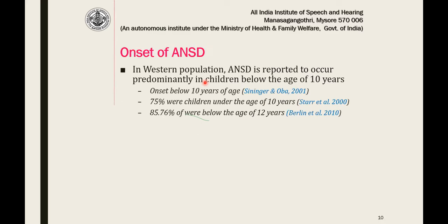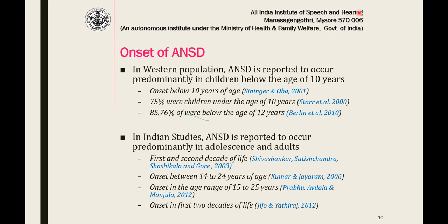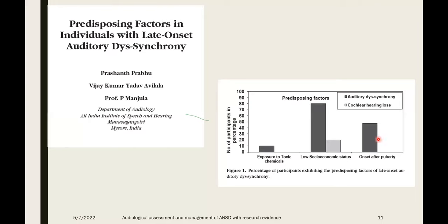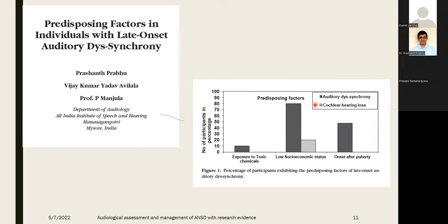When does ANSD onset? In Western populations, ANSD usually occurs in children below 10 years. But Indian studies show that we more commonly see late onset — in adolescents and adults — rather than in children. We still don't know the exact reason. One factor found was low socioeconomic status, with most patients coming from a rural background — possibly malnutrition triggering a neuropathy-like response. That is one theory.